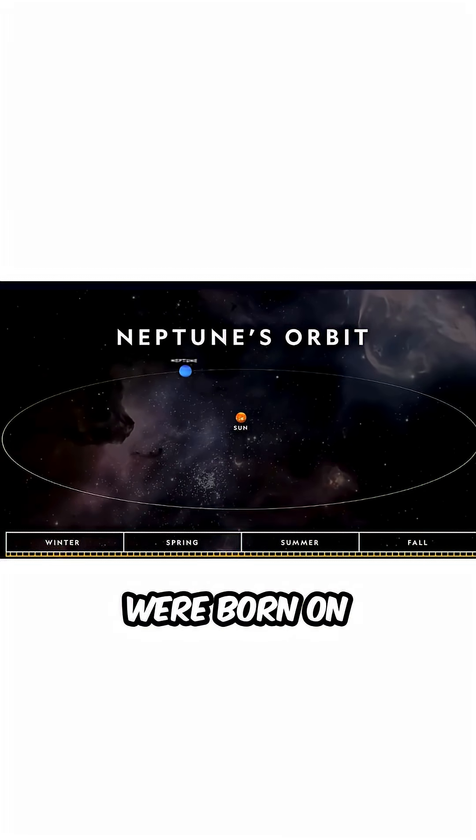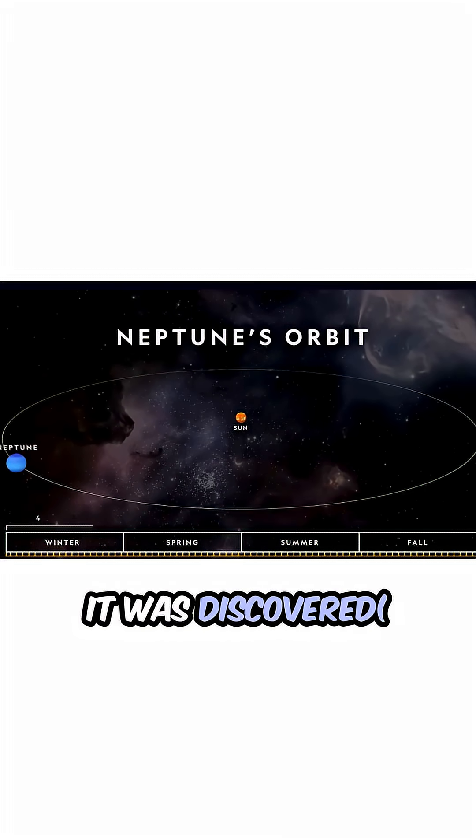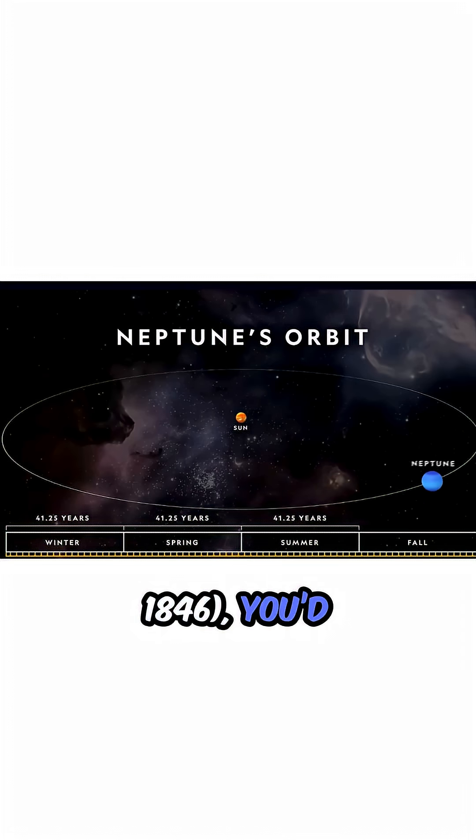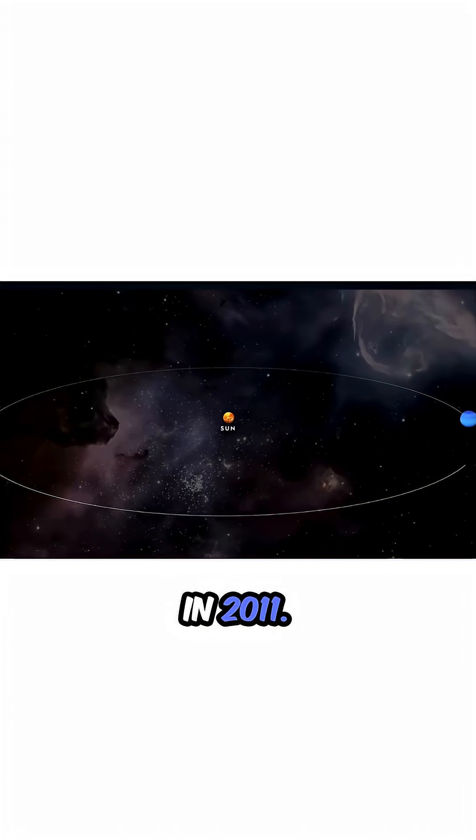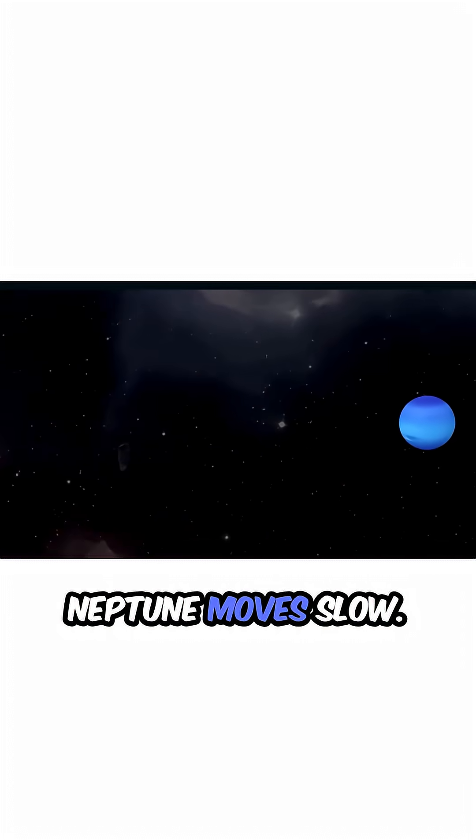Imagine if you were born on Neptune the day it was discovered, 1846. You'd only just be finishing your first birthday in 2011. Neptune moves slow.